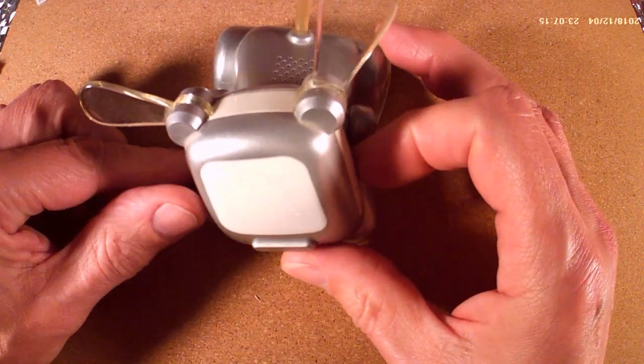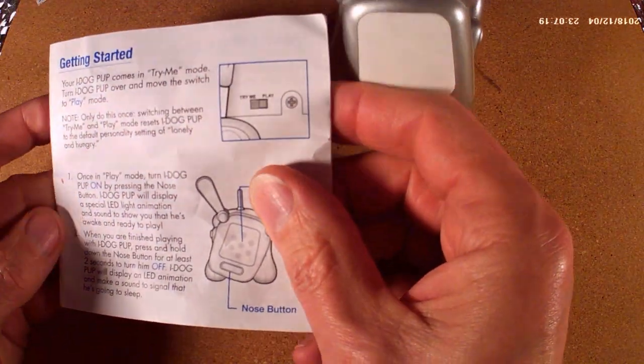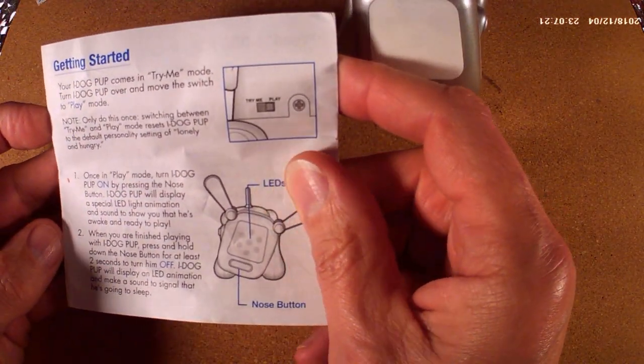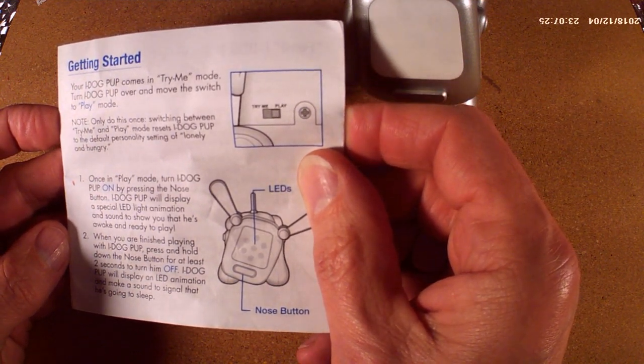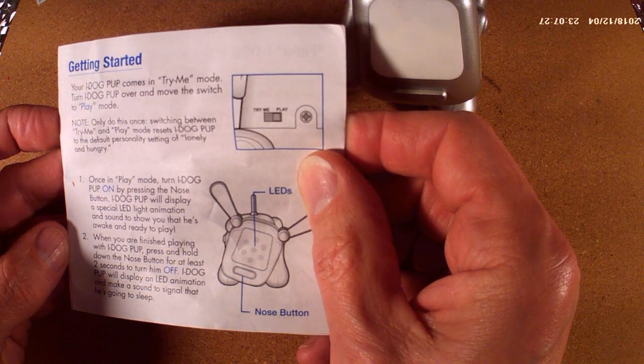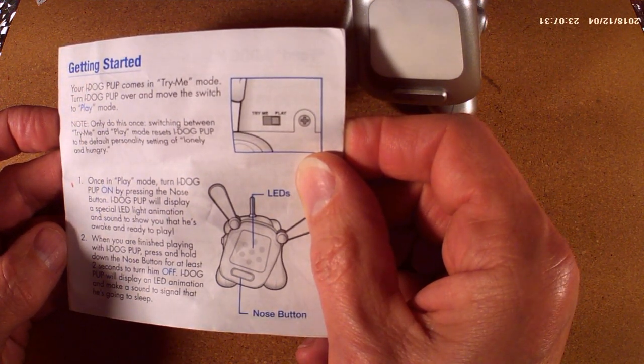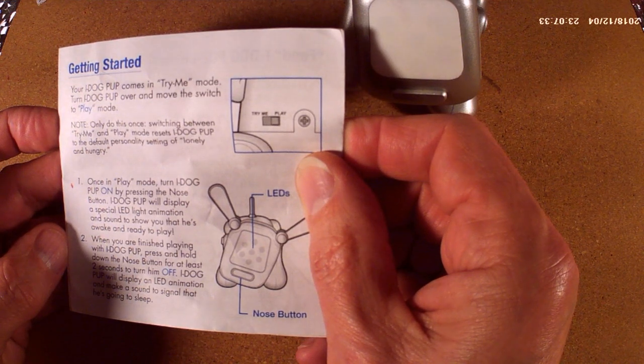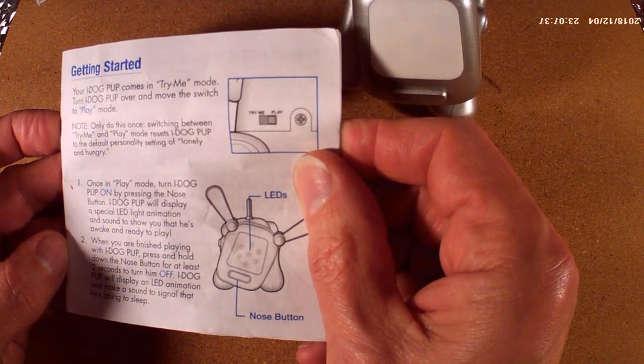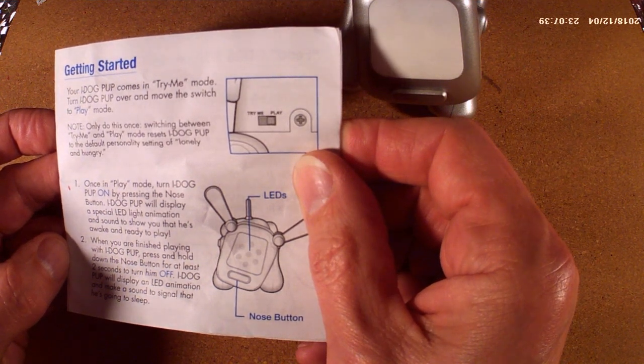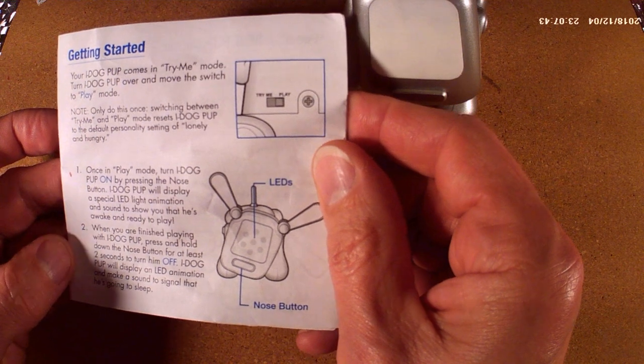Okay, I've already put fresh batteries in it. Let's have a quick look at the instructions. It comes in try me mode. Turn it over, move the switch to play. Only do this once. Switching between try me and play mode resets eye dog pup to default personality setting of lonely and hungry.